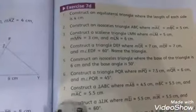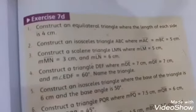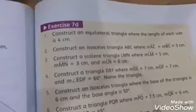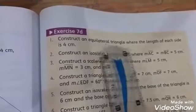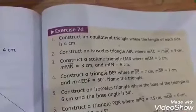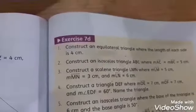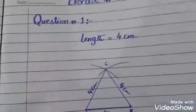Question 1 of Exercise 7d is: construct an equilateral triangle where the length of each side is 4 centimeters. Equilateral triangle means that all sides are equal. We have to solve this question.